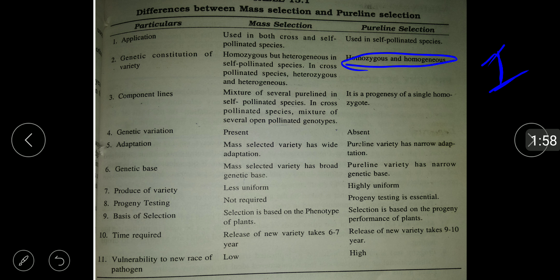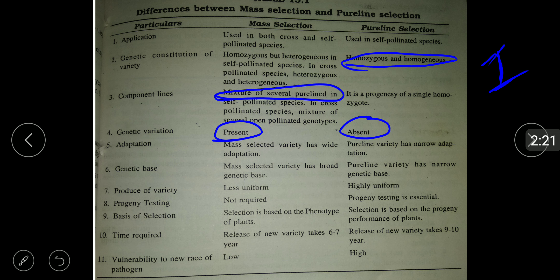Mass selection is a mixture of several pure lines, which are individually homozygous, but due to the mixture of many pure lines the population becomes heterogeneous. Genetic variation is present in mass selection. In pure line selection there is no variation due to its homozygous and homogeneous nature. Mass selection has wide adaptation, while pure line selection has narrow adaptation.